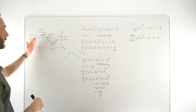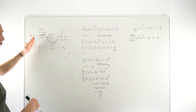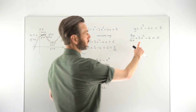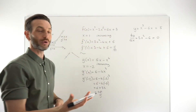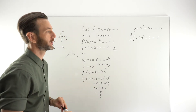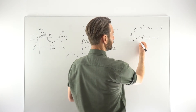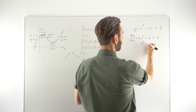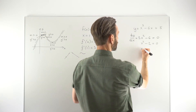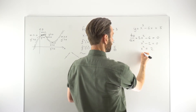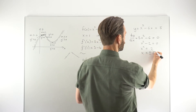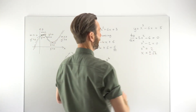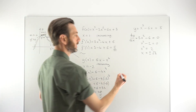The stationary points are where things change: the graph was going up, it stops, then it goes down, stops, then goes up again. They provide the dividing line. To find them, we set the derivative equal to zero: 3x² − 6 = 0, divide through by 3 to get x² − 2 = 0, so x² = 2, giving x = ±√2. Remember to include the minus when taking a square root — there should be two solutions.